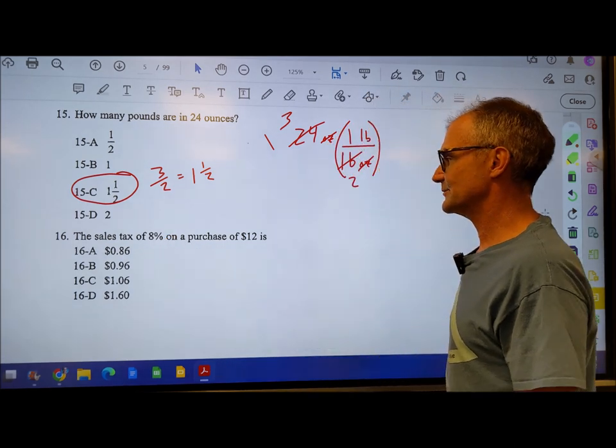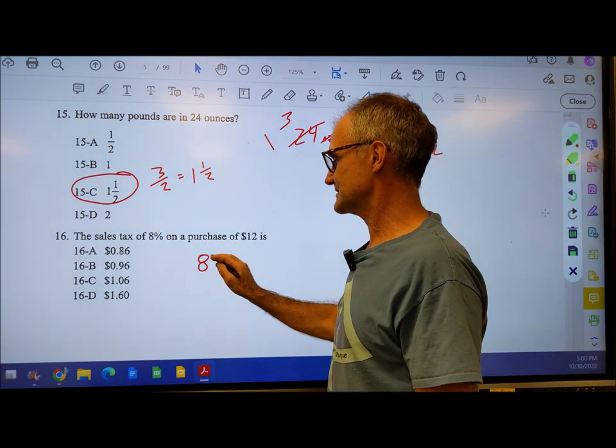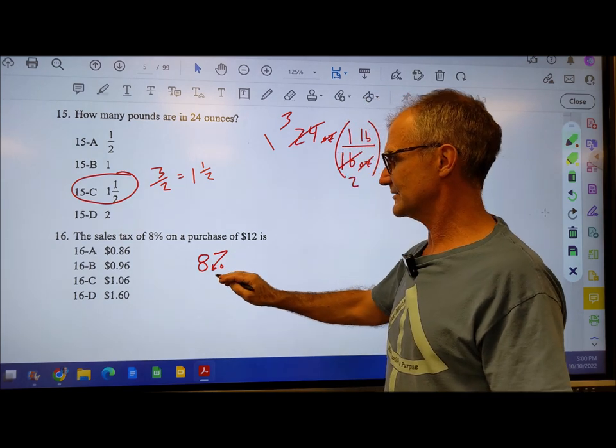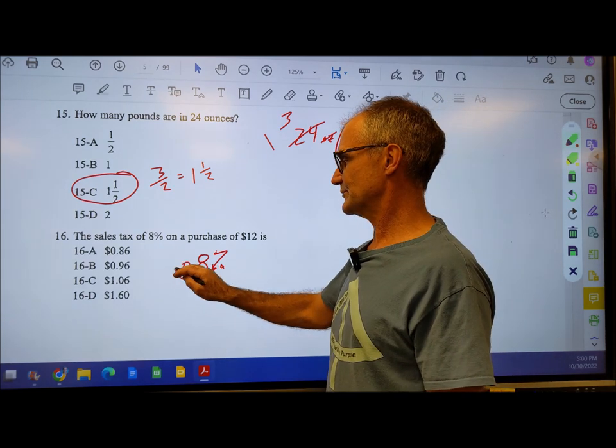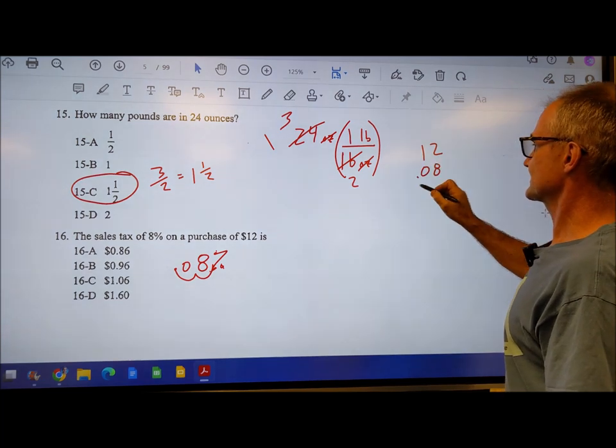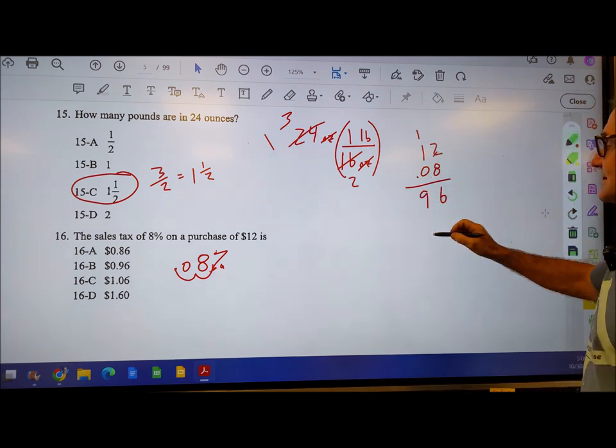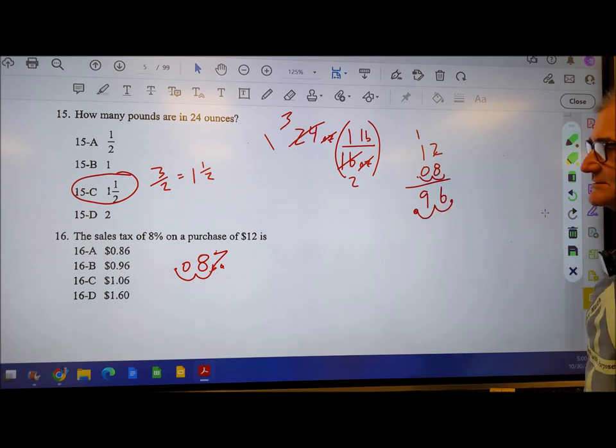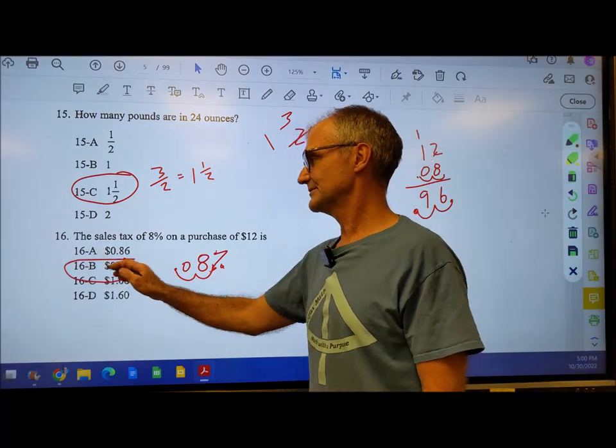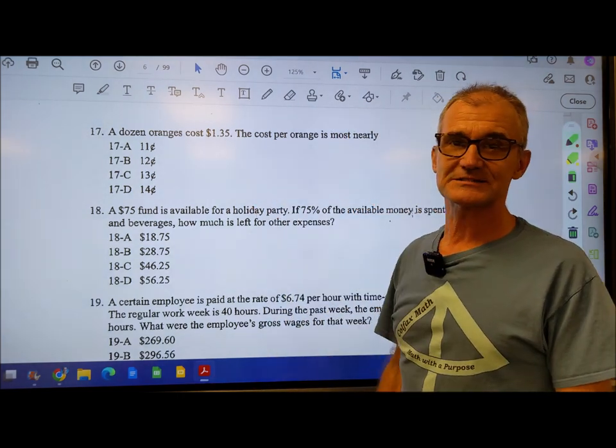Sales tax of 8 percent on a purchase of $12. I'm going to multiply, 12 dollars times 8 percent. I need to convert to a decimal. This is like an arrow shooting the decimal place over twice, so 8 percent is the same as 0.08. 8 times 2 is 16, carry the 1, 8 plus 1 is 9. When I'm done, I bring my answer over two places. My answer is 96 cents or 0.96 of a dollar.